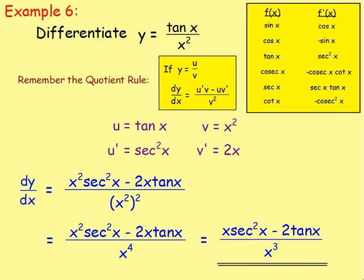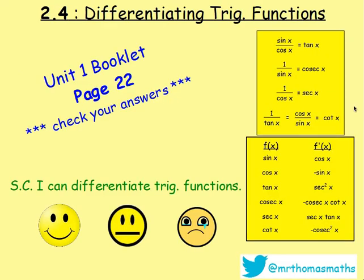High five everybody! Try some of these questions — it's in the Unit 1 workbook, page 22. Check your answers as you go. It's differentiating trig functions. Just remember: sin over cos is tan; 1 over sin x is cosec x; 1 over cos is sec; and 1 over tan is cot. The differentiation table is given in the exam, apart from sin x and cos x. Good luck! And Connor, good luck with that chat-up line. Woo! Bye!